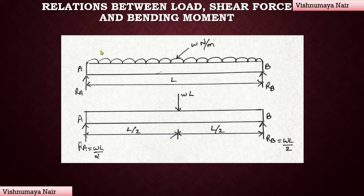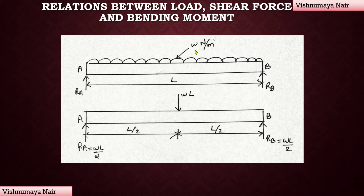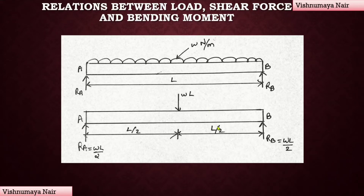For deriving these relations, let's consider a simply supported beam which is subjected to a uniformly distributed load with rate of loading w N per meter run. We know that for solving numerical problems, we have to convert this UDL into an equivalent point load whose value will be equal to the product of the rate of loading and the length of the UDL. Here the UDL is spread over the entire length of the beam, L meters. Therefore, the equivalent point load will be equal to W into L and it will be acting at the centre of the UDL, at a distance of L/2 from both ends.